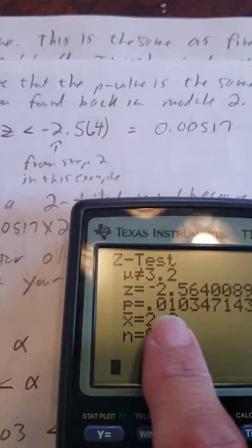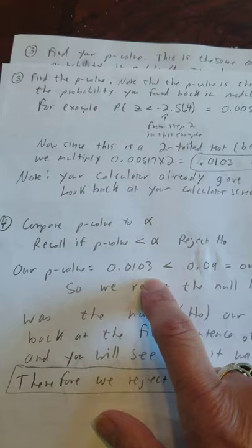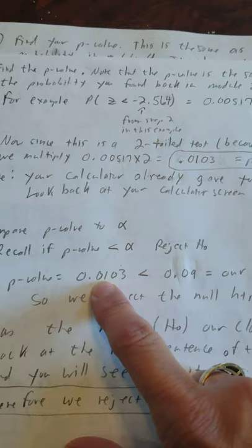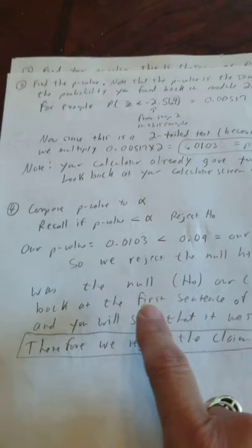Now personally, you already told your calculator it was a two-tailed test. It already did this for you. There's the answer that saves you a lot of work. I would go with that. Our next step is we compare the p value to alpha. Remember, if the p value is less than alpha we reject the null. Our p value 0.0103 is less than our given alpha 0.09. You just look at the first two digits. That's like one cent, that's like nine cents. One penny is less than nine pennies. Therefore, we reject the null hypothesis.